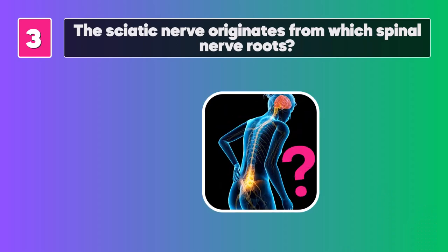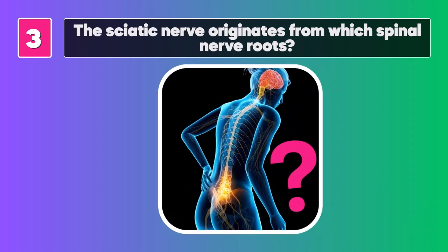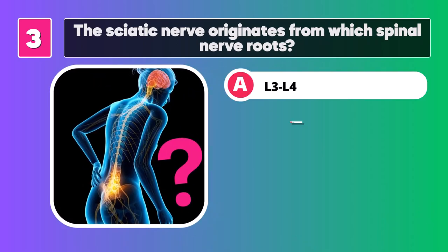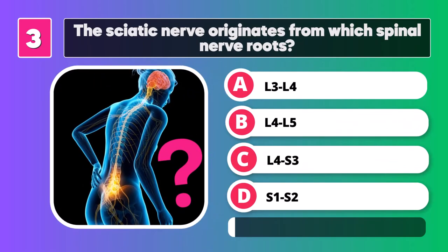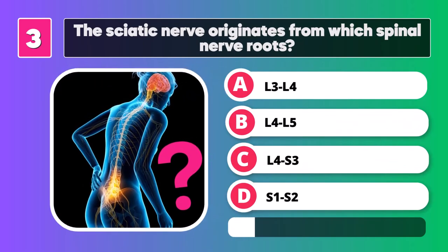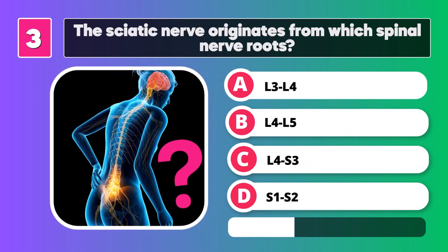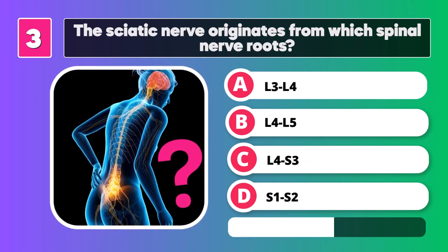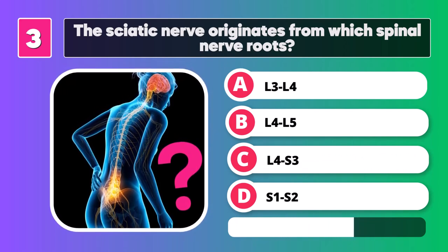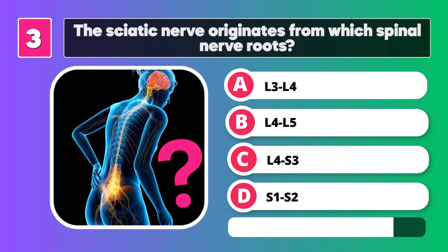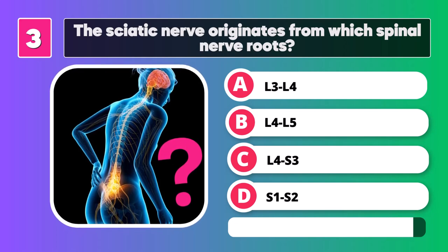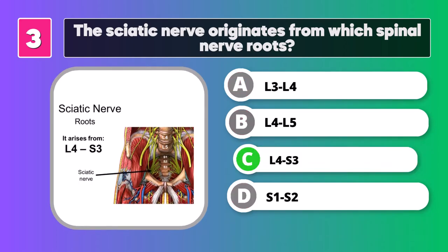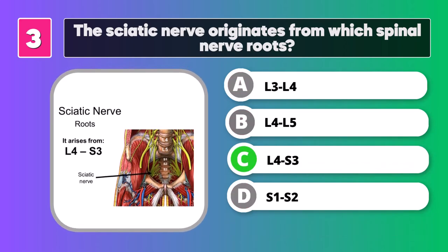The sciatic nerve originates from which spinal nerve roots? C. L4 to S3.